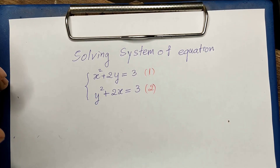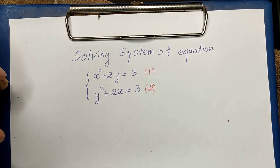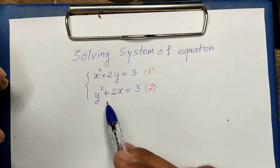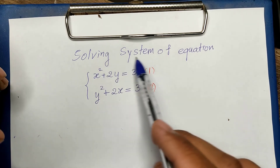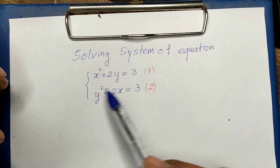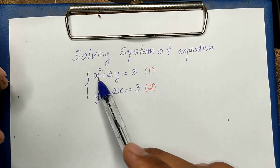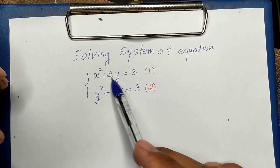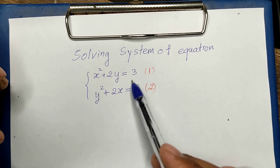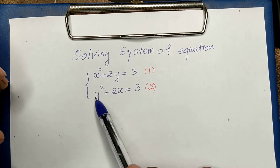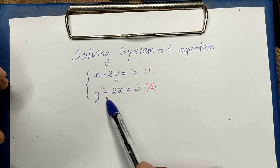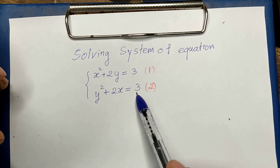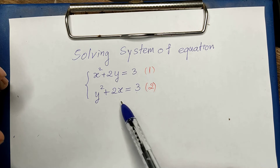Hello everyone, welcome to the education channel. Today we have a system of equations. The first equation is x squared plus 2y equals 3, and the second equation is y squared plus 2x equals 3.